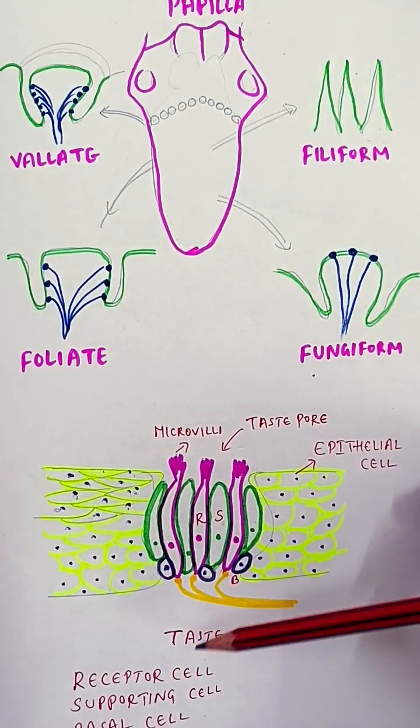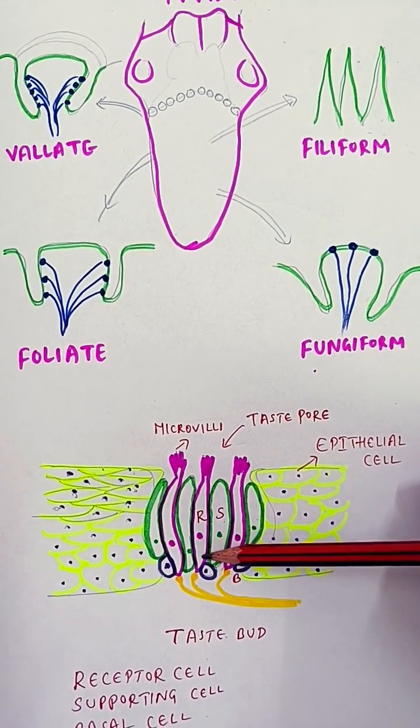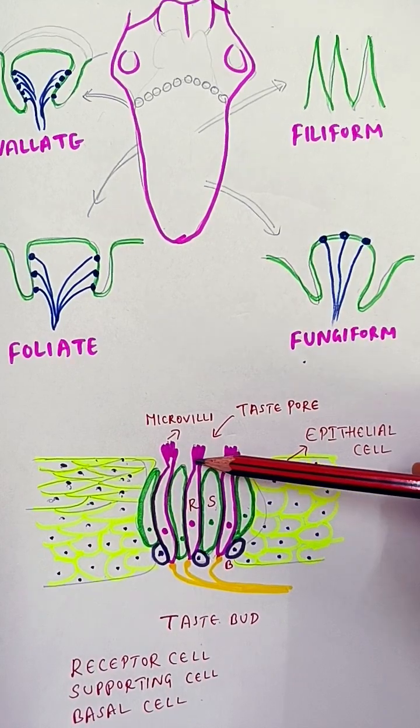All the taste buds are made up of three types of cells: receptor cell, supporting cell, and basal cell. If you see a receptor cell, it has microvilli on the surface. On the top, these microvilli are opening into a pore.